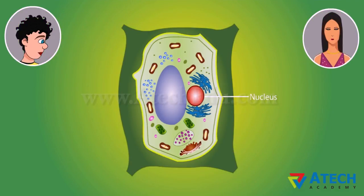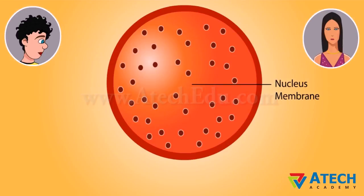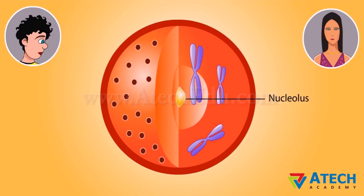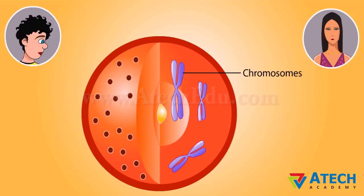Nucleus is an important component of the living cell. It is generally spherical and located in the center of the cell. Nucleus is separated from cytoplasm by a membrane called nuclear membrane. It contains smaller spherical bodies called nucleolus, and also thread-like structures called chromosomes.